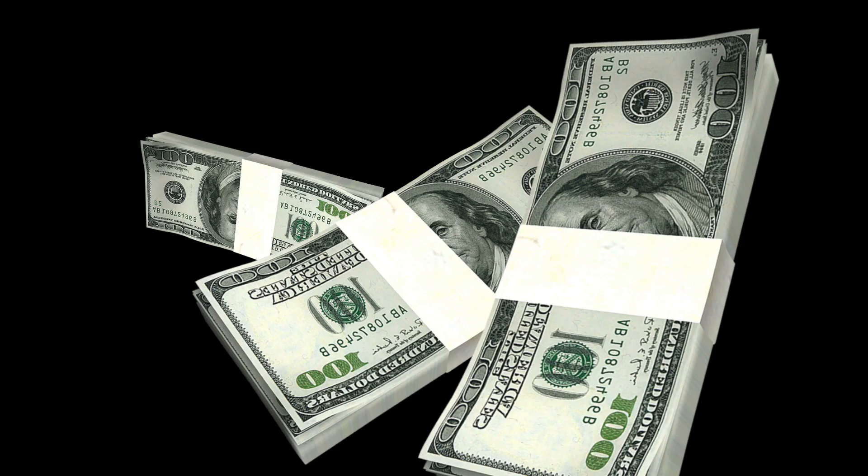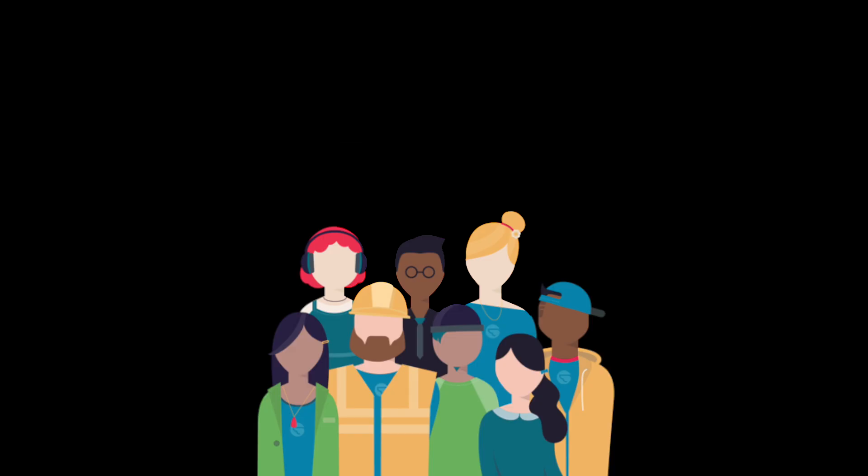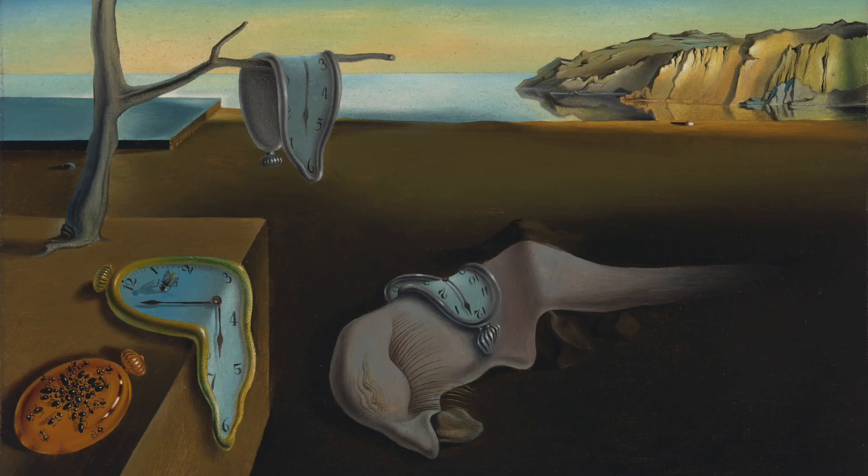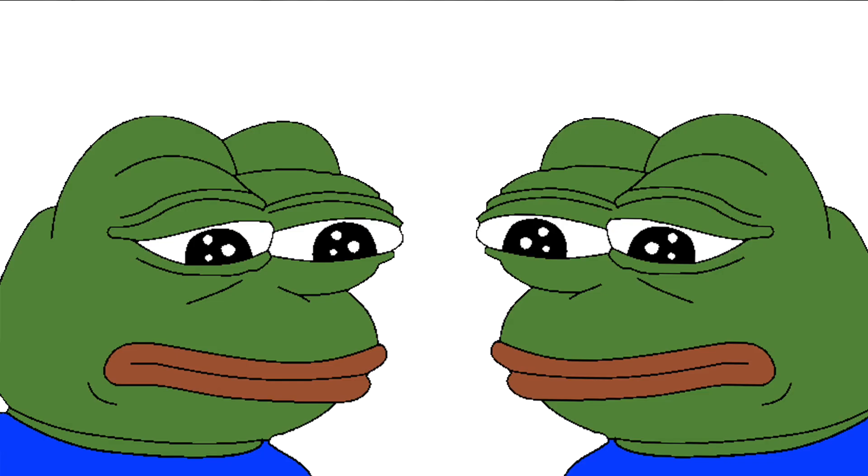The article divides dark patterns into three large categories: temporal dark patterns, monetary dark patterns, and social capital-based dark patterns. Temporal dark patterns are dark patterns that mess with our perception of time. They force us to play longer and more often, and ultimately make us waste our time and might make us feel bad about it.